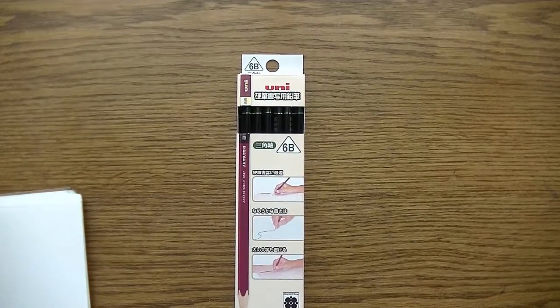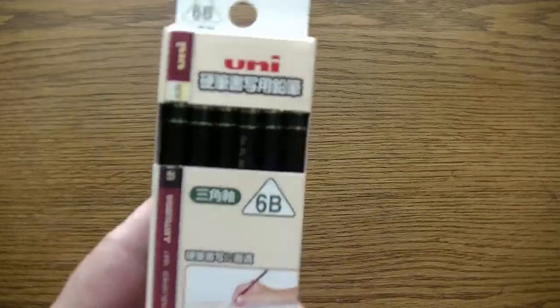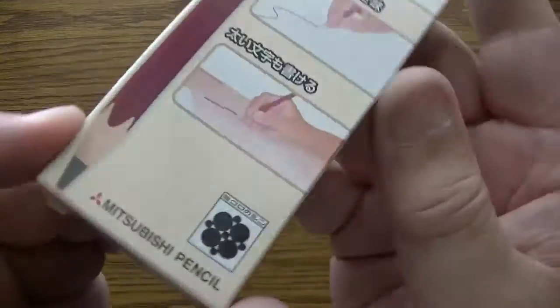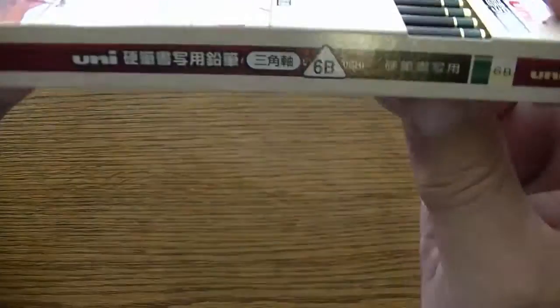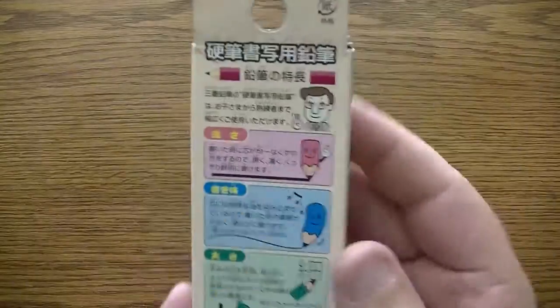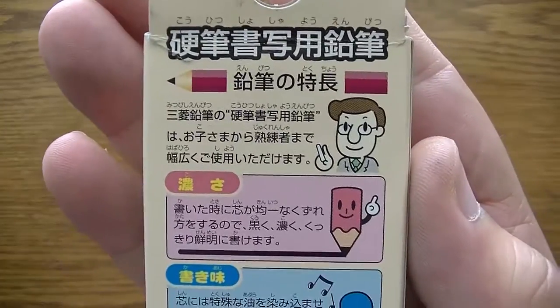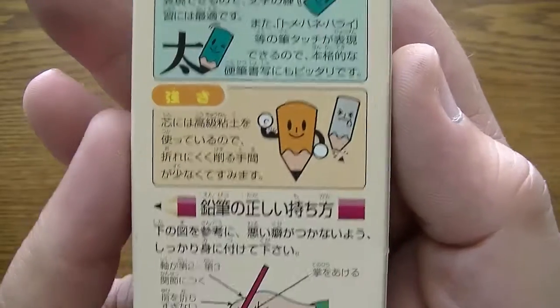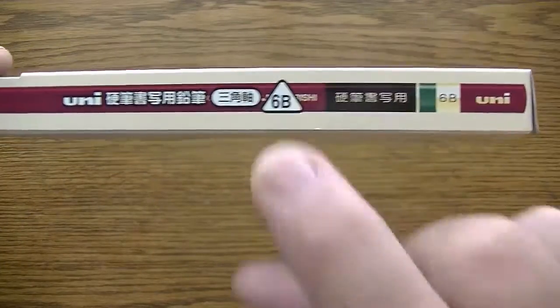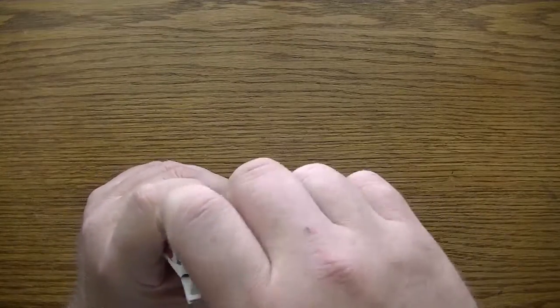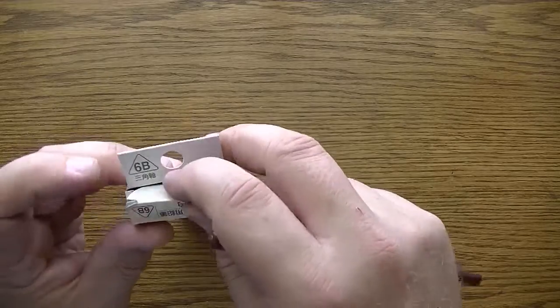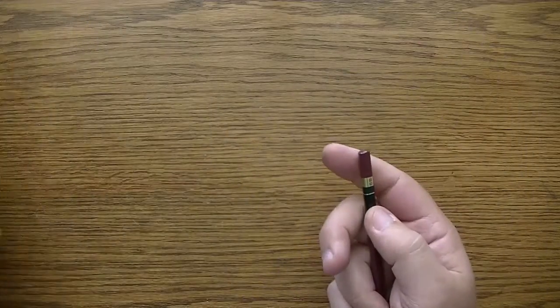Well, let's take a close look at this. You can see some Japanese up there and Mitsubishi. Here's the side of the box. Here's the back of the box. Cute, but I can't read it. Even tells you how to hold a pencil. They're all 6Bs. Now, let's go ahead and open these up.